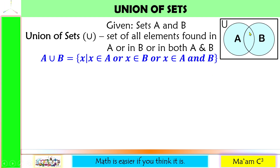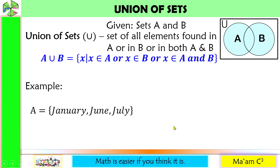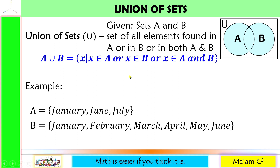These are the elements of set A, these are the elements of set B, and these are the common elements of A and B. Let's have an example. Set A contains the elements January, June, and July. Set B contains the elements January, February, March, April, May, and June — the first six months of the year.